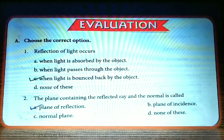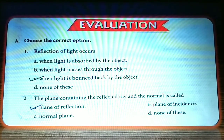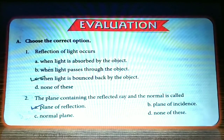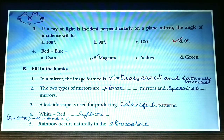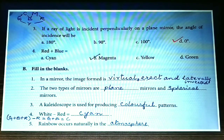More questions — choose the correct option. Reflection of light occurs when light is bounced back by the object. Second: the plane containing the reflected ray and the normal is called the plane of reflection. Third: if a ray of light is incident perpendicularly on a plane mirror, the angle of incidence will be zero degrees. Fourth: red plus blue — using our mnemonic aid, red plus blue equals magenta, so the answer is magenta.